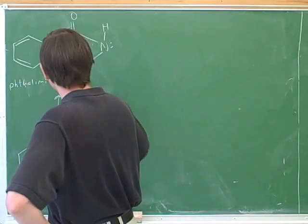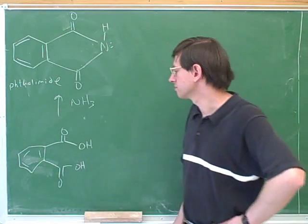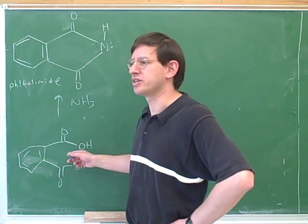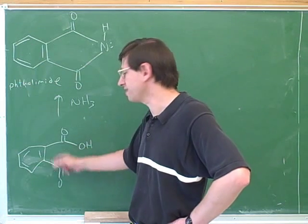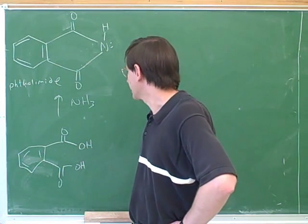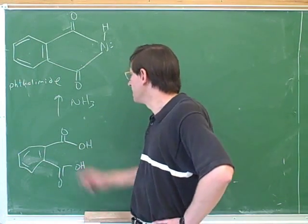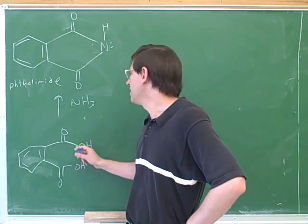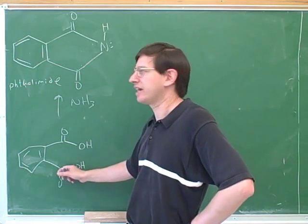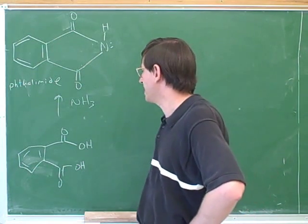NH3. Good. This is going to be another addition-elimination just like all those other nucleophilic attacks. What types of functional groups do we have here? Carboxylic acids. Yeah, carboxylic acids. The nitrogen will attack one of the carboxylic acids and displace the OH. And then the nitrogen will attack the other carboxylic acid and displace the other OH.